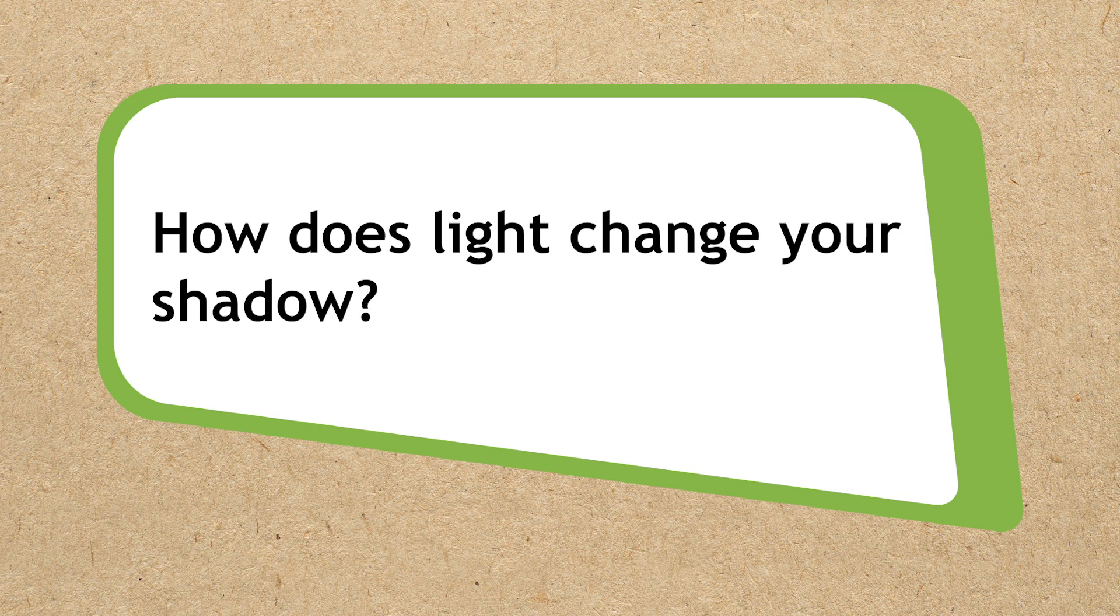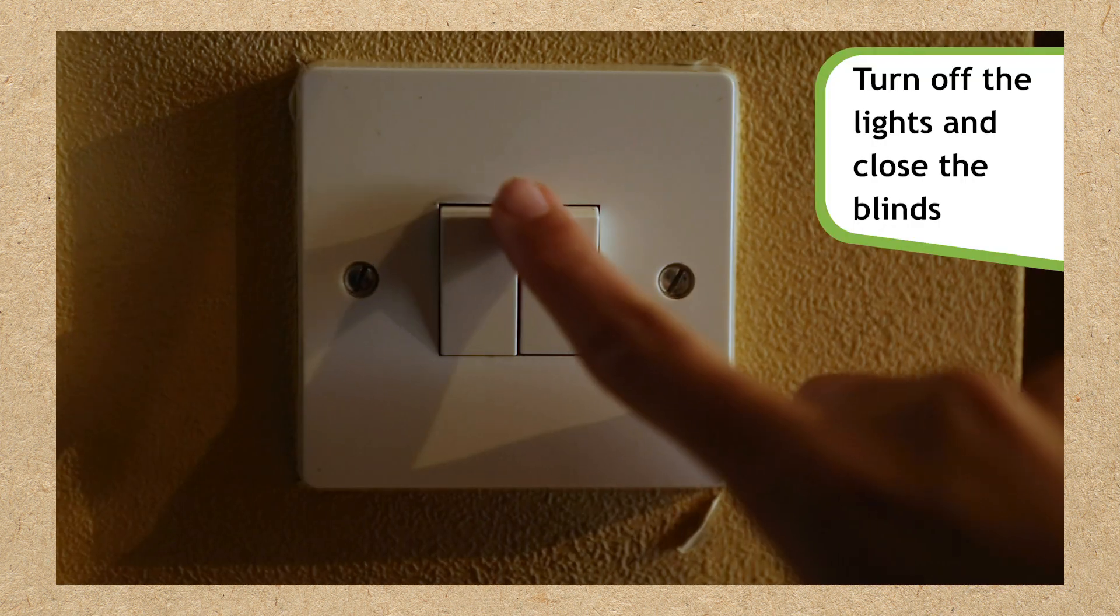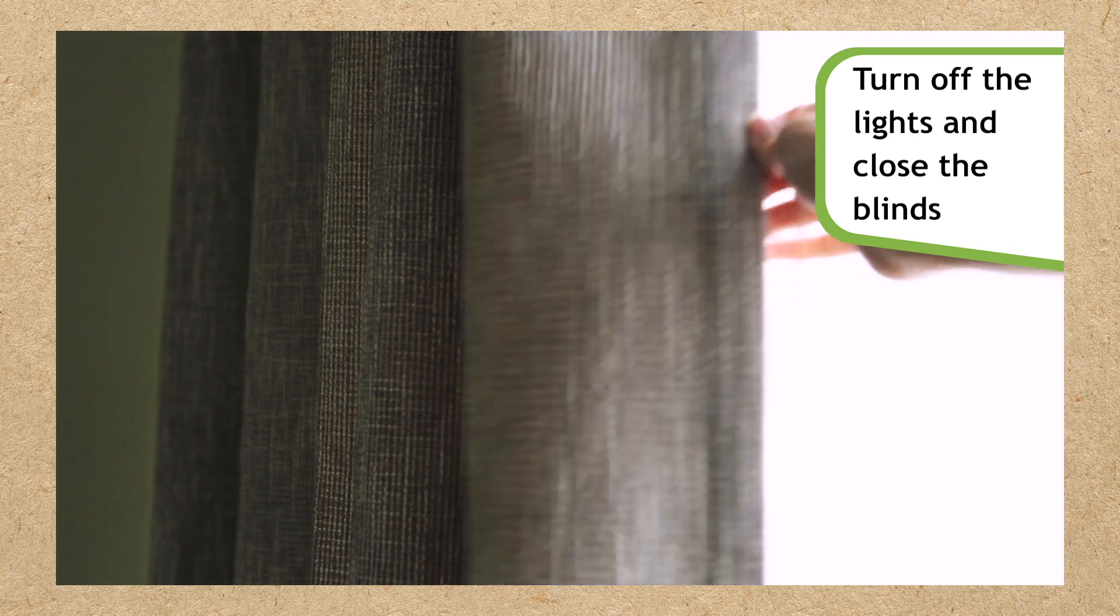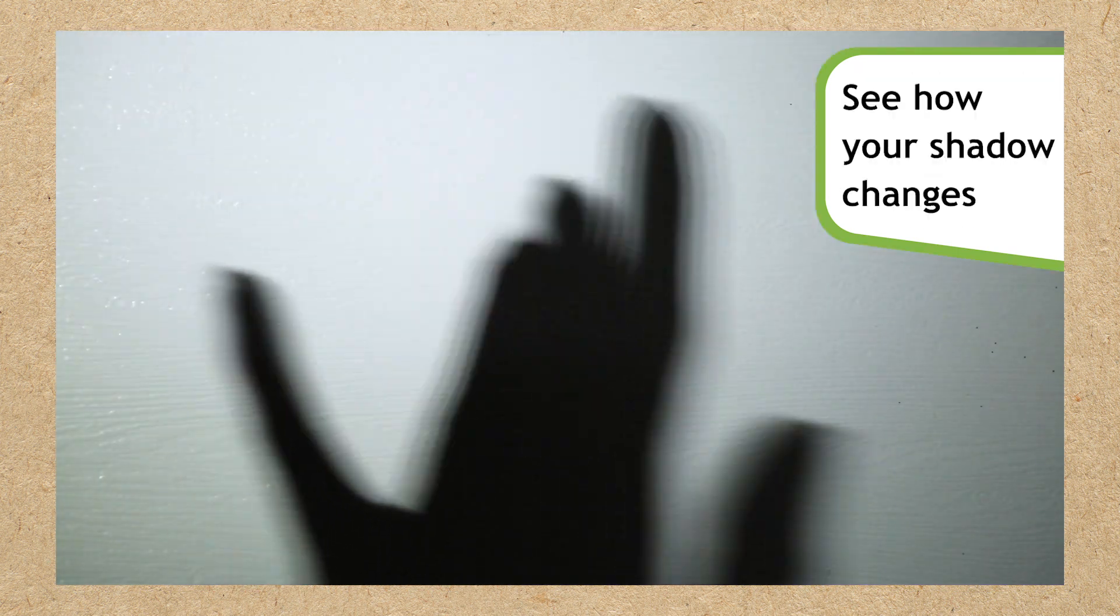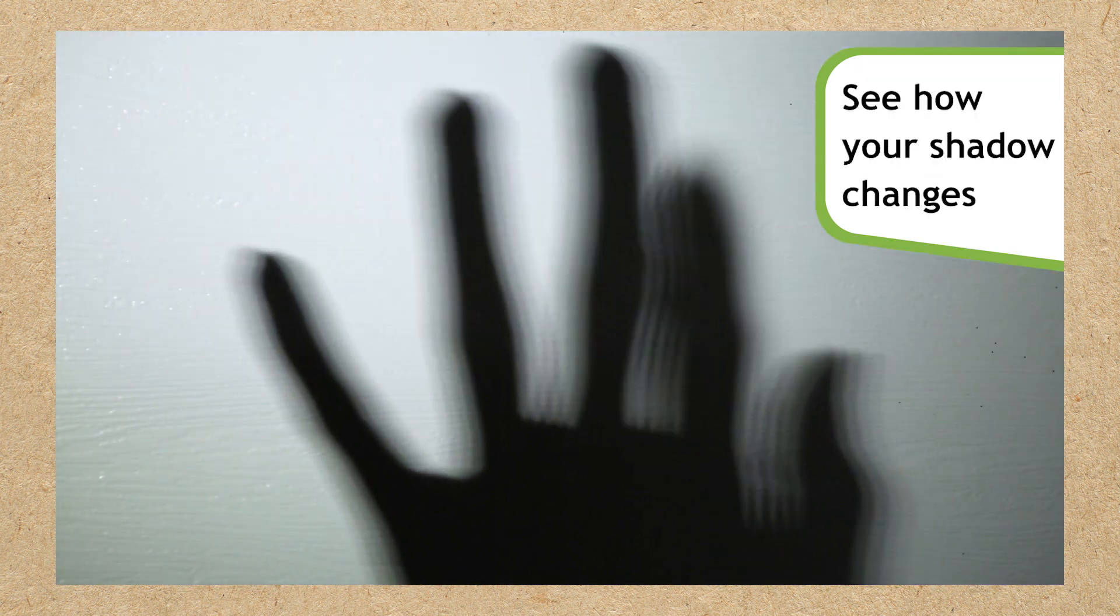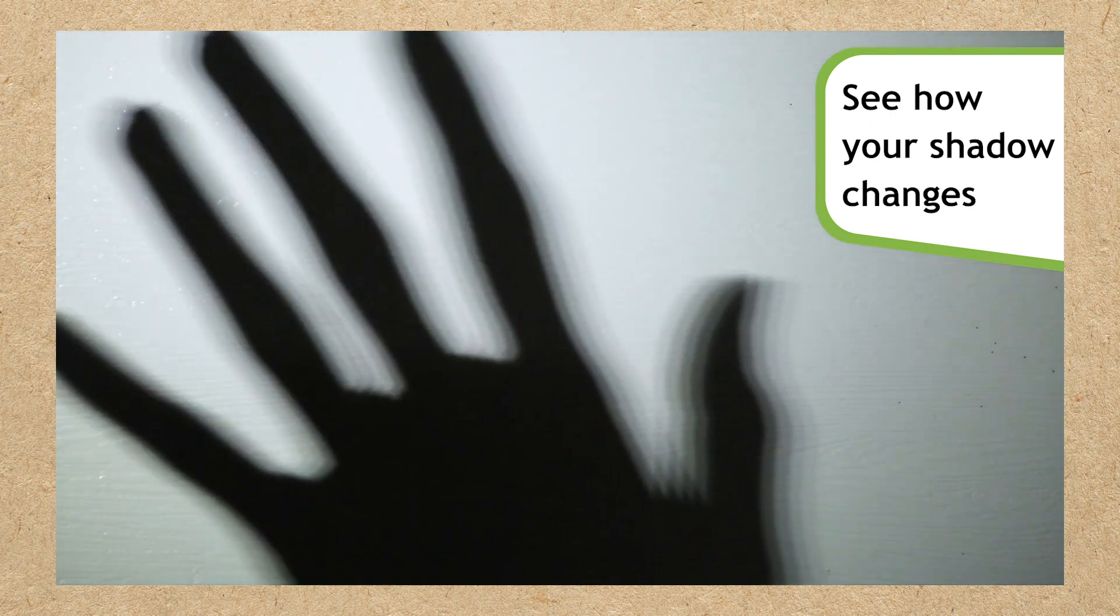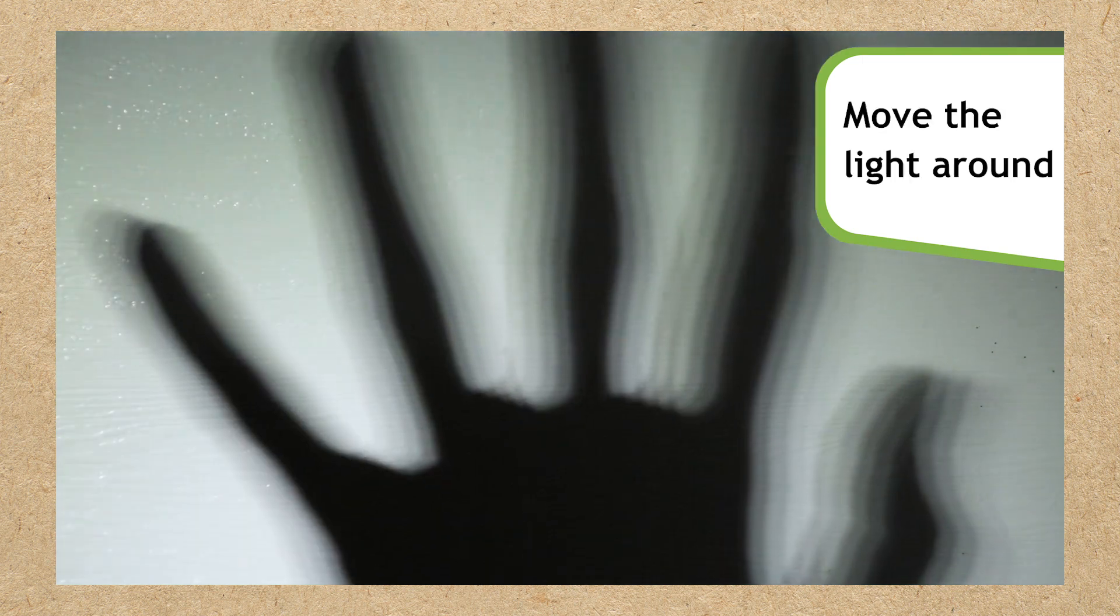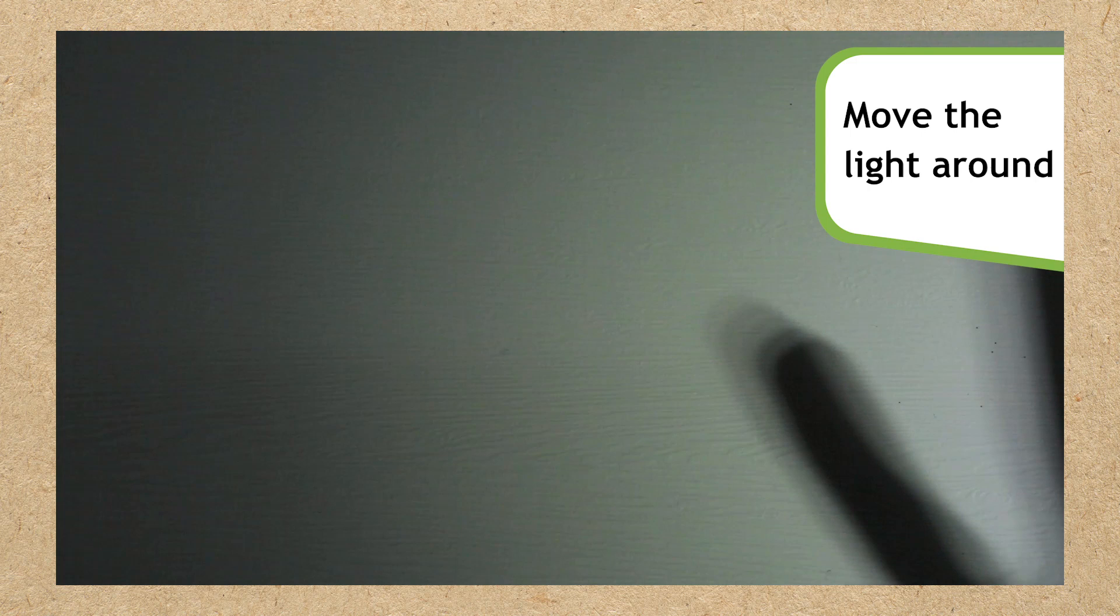Now you're going to find out how light changes your shadow. Turn off the lights and close any blinds or curtains. Strike a pose. Ask someone to shine a torch and see how your shadow changes while you're in different positions. Look at how the shadow changes as the light moves around it.